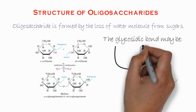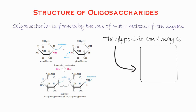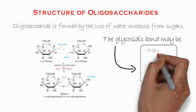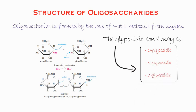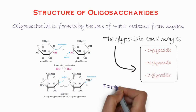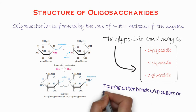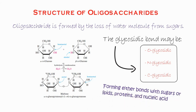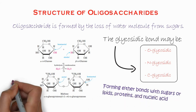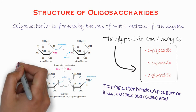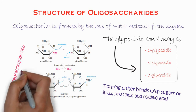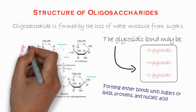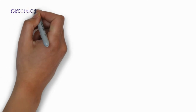The glycosidic bond may be either an O-glycosidic bond, C-glycosidic bond, N-glycosidic bond, or in some cases an S-glycosidic bond. These bonds form with sugars, lipids, proteins, and nucleic acids. However, in oligosaccharides, only the O-glycosidic bond is common, especially in simple carbohydrates.